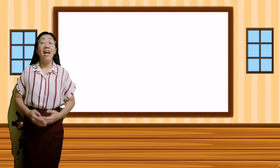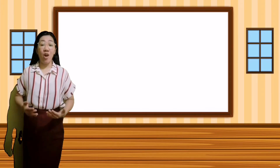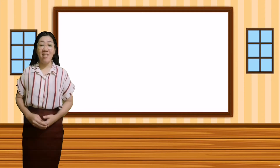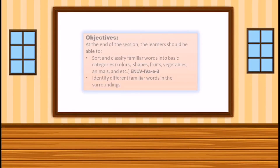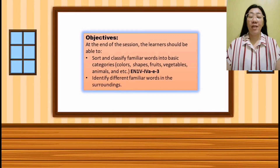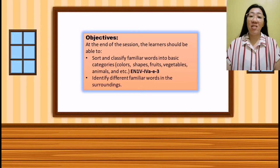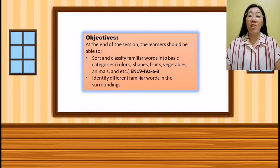But before that, let us know what are the objectives in today's lesson. At the end of the session, the learner should be able to sort and classify familiar words into basic categories — that is color, shapes, fruits, vegetables, animals, and etc. — and identify different familiar words in the surroundings.